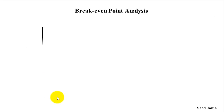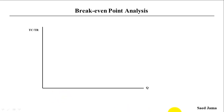Now if you look at the graph, you can see two coordinates: the x-axis and the y-axis. The y-axis is the total cost or total revenue, and the x-axis is the quantity.